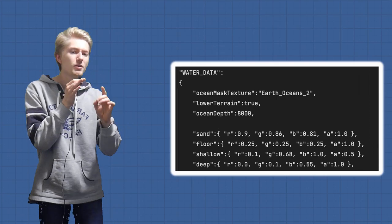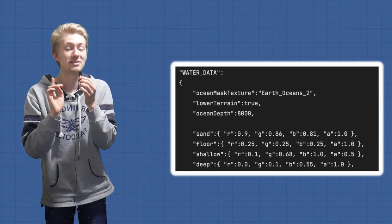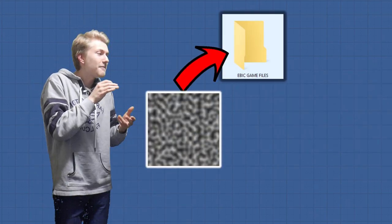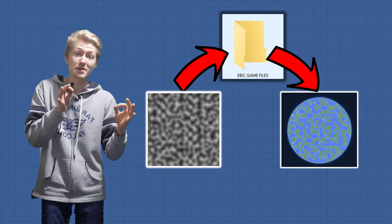Going back to the JSON file, I don't know what lower terrain and ocean depth mean, but I do know exactly what the ocean mask texture is. Basically you can take a black and white image, feed it into the game files, and the game will automatically make a map of the ocean based on the black and white parts of the image. And you can do this with any image you want.